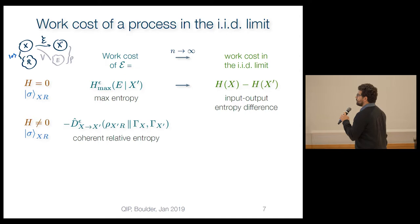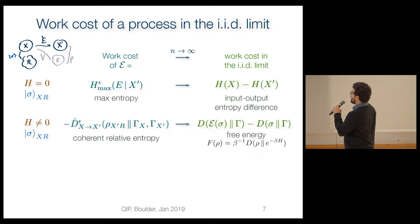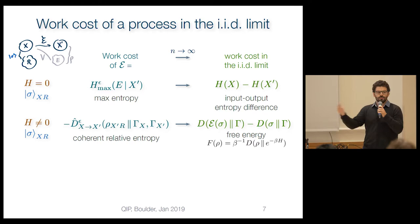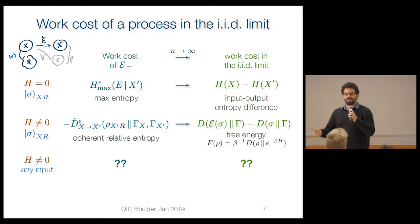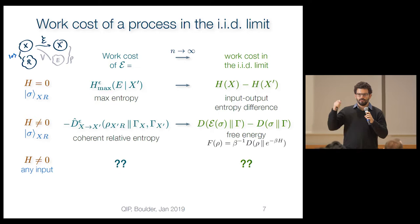A more interesting example is when the Hamiltonian is non-trivial. We then have this coherent relative entropy object, and in the IID limit it goes to the difference in a different potential — the free energy. In our information-theoretic framework, that's just the relative entropy of whatever state you have relative to this gamma operator. But now: what if I'm interested in feeding in any possible input state? What if I want to build an implementation in my quantum chip that works for whatever state the user feeds in? That's the question I'll address now.